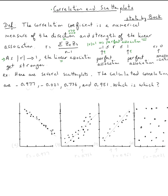So let's do this example. Here are several scatter plots. The calculated correlations are negative 0.977, negative 0.021, 0.736, and 0.951. Which is which?